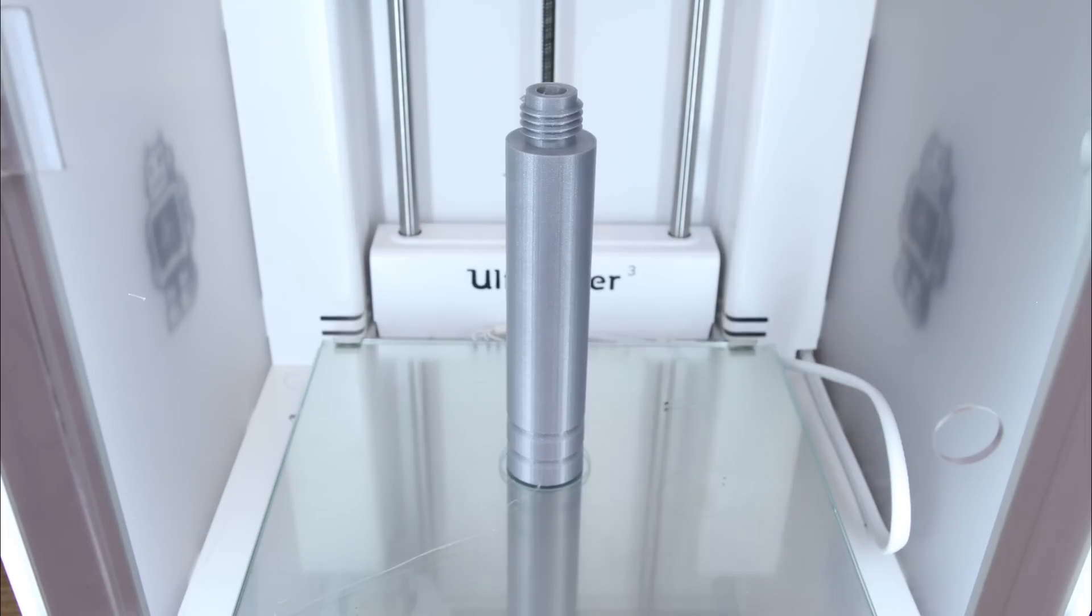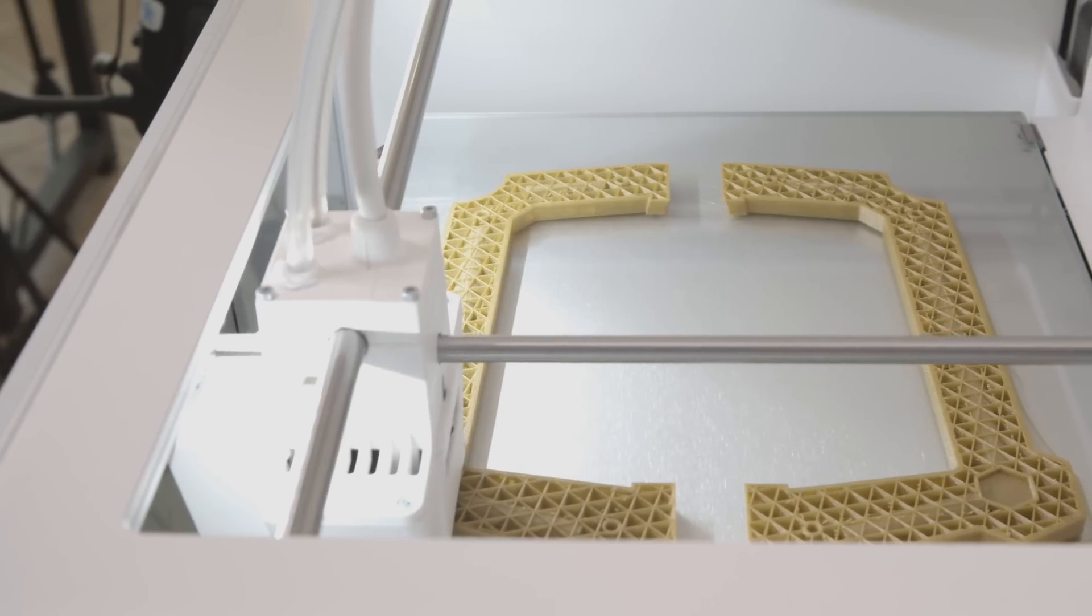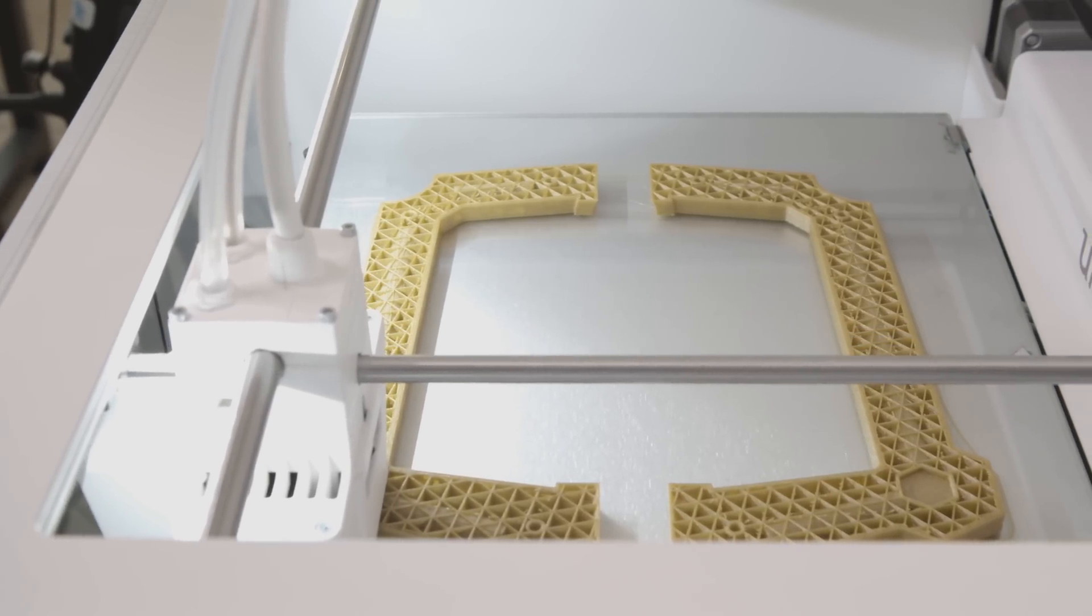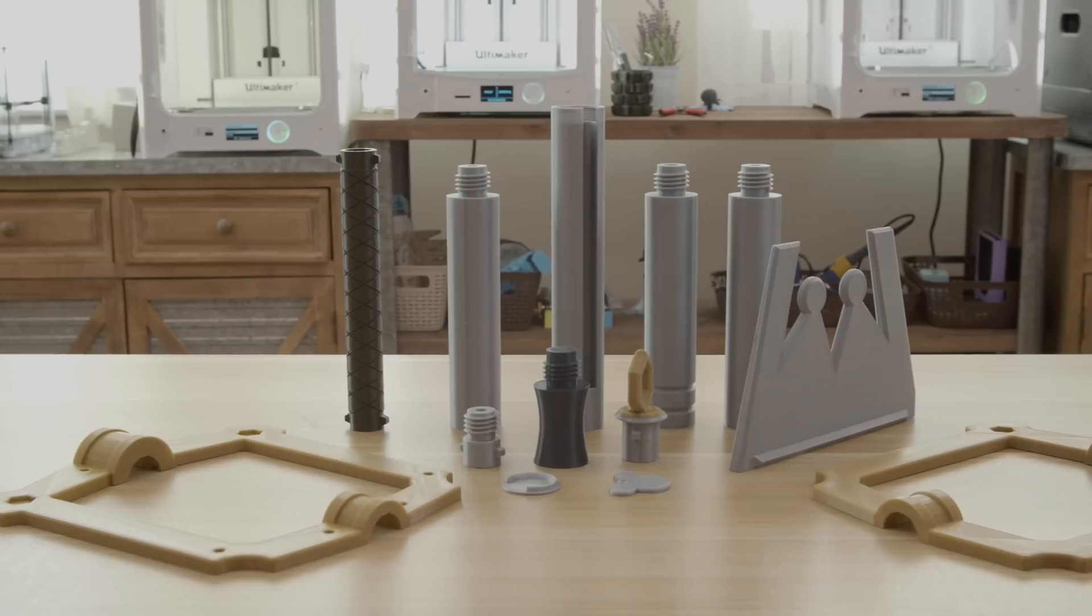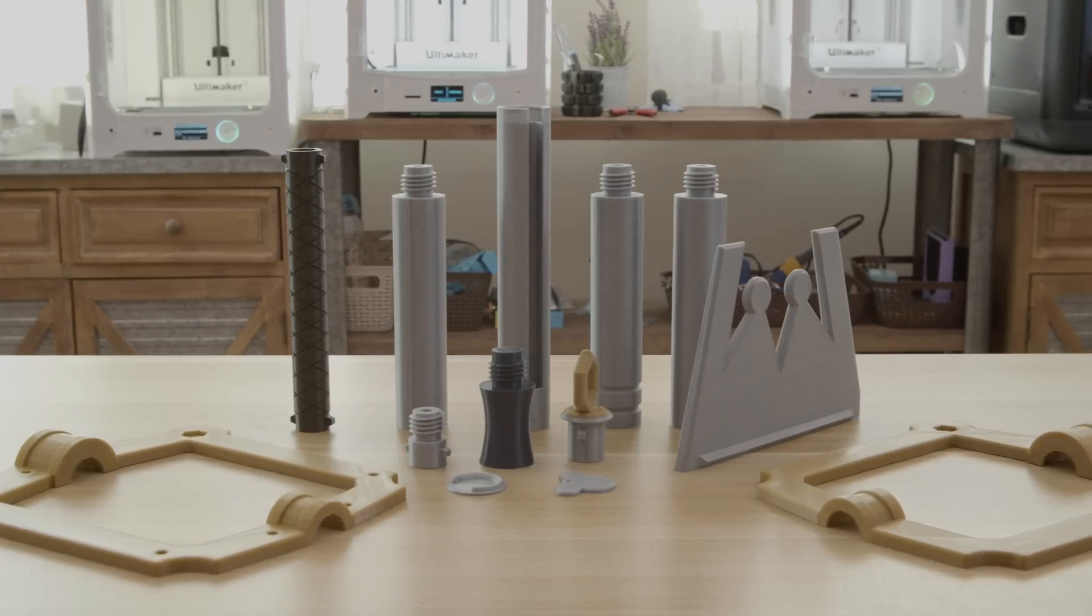It's a good example of showing quality parts straight out of the printer. The handle is the biggest part of the assembly and it just about fit on the Ultimaker S5. There's no support material needed for any of the parts so they're ready to go right out of the printer.